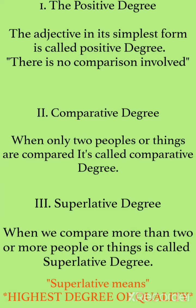Second is comparative degree. When only two people or things are compared, it is called comparative degree. And when two or more things or people are compared, it is called superlative degree. Superlative degree means the highest degree of quality — remember, it is important.